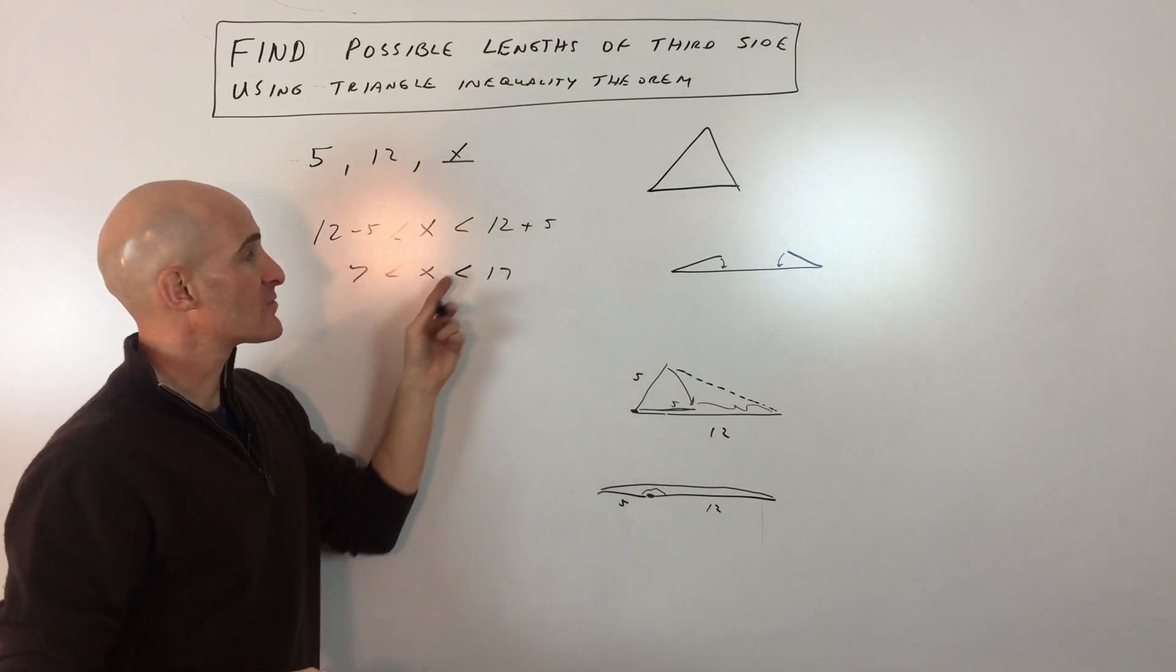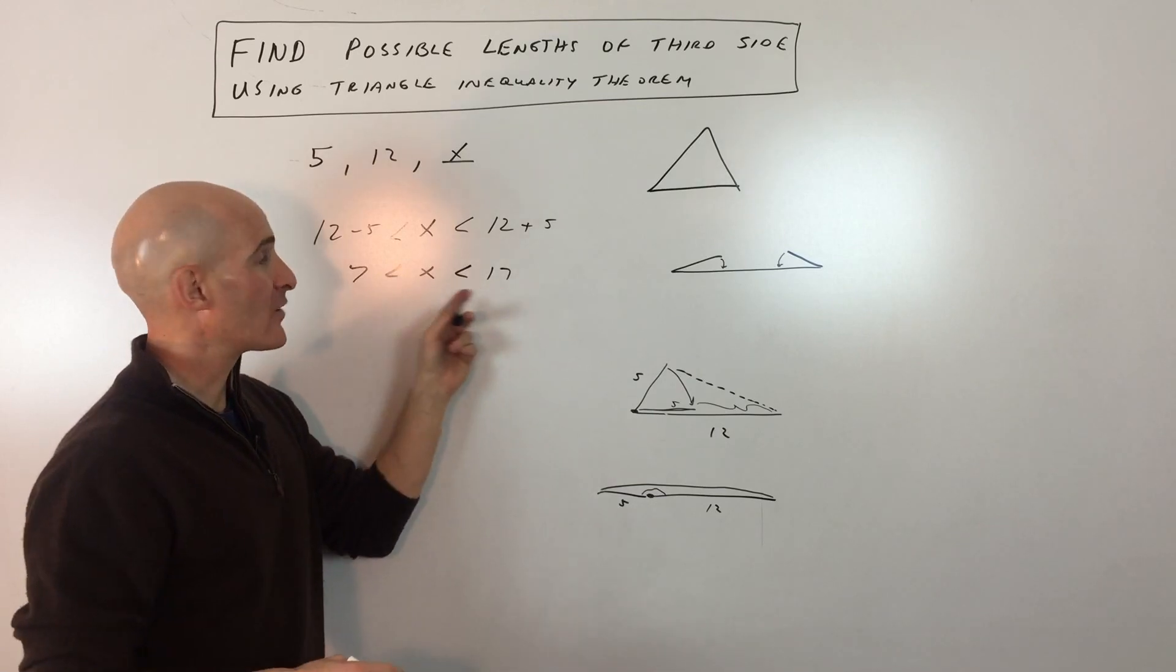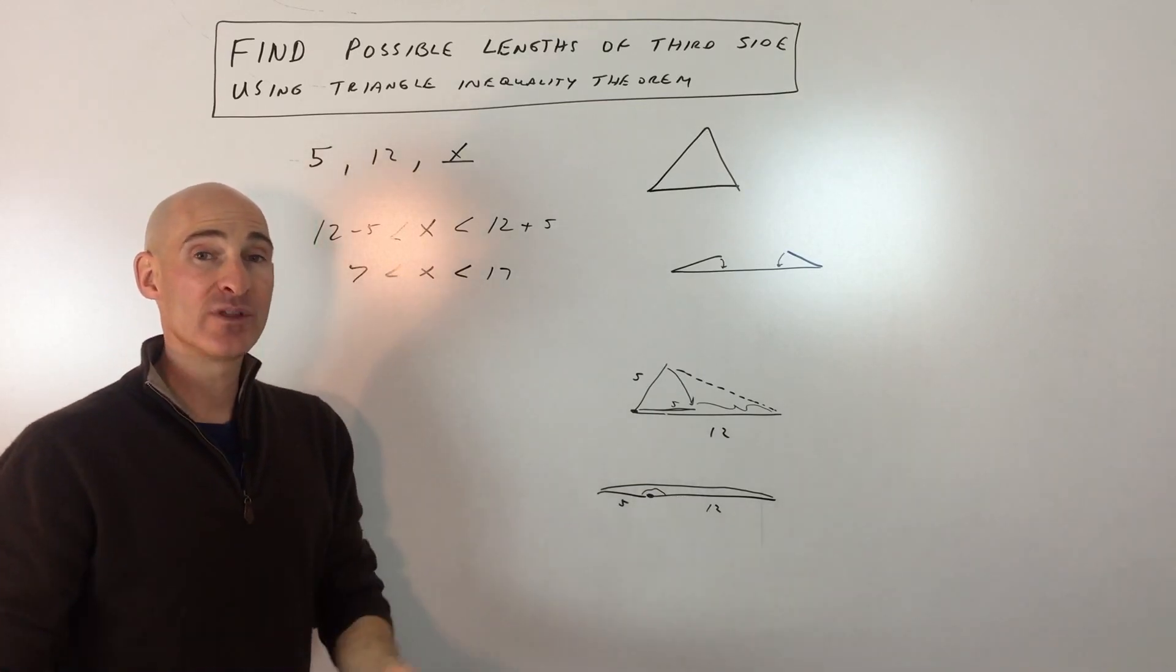Again, the shortcut is just to add and subtract the two side lengths, and that'll give you an interval of the possible lengths of the third side.